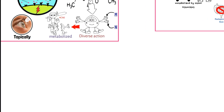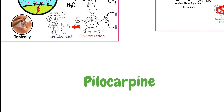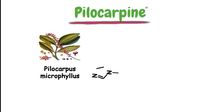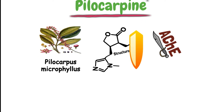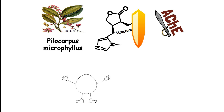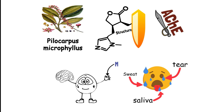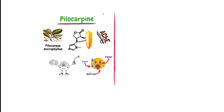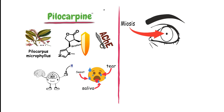Then we have the alkaloids, in which the first one is pilocarpine. Pilocarpine is an alkaloid derived from Pilocarpus microphyllus and other species. It is resistant to hydrolysis by the enzyme acetylcholinesterase, has mainly muscarinic actions, and can cross the blood-brain barrier. Pilocarpine is a potent stimulator of sweat, tear, and saliva secretions, but its non-selectivity among receptors limits its clinical uses. Therapeutically, pilocarpine is used topically for its miotic effect to overcome the mydriatic effect associated with atropine.